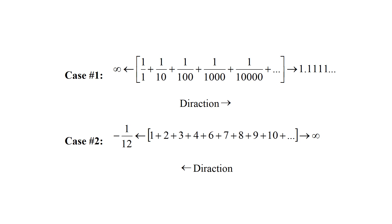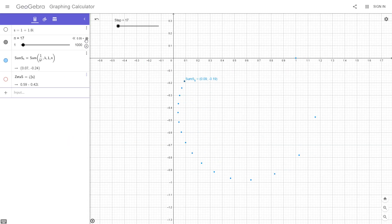If you are assigning a value for a series that decreases to a specific value, then you can also assign a value for a series that increases from a specific value. When the series increases from a specific value, this is what I like to call an origin point. Let's call case number one when a series decreases to a specific value, and case number two when a series increases from a specific value. Other than those two cases there is one more.